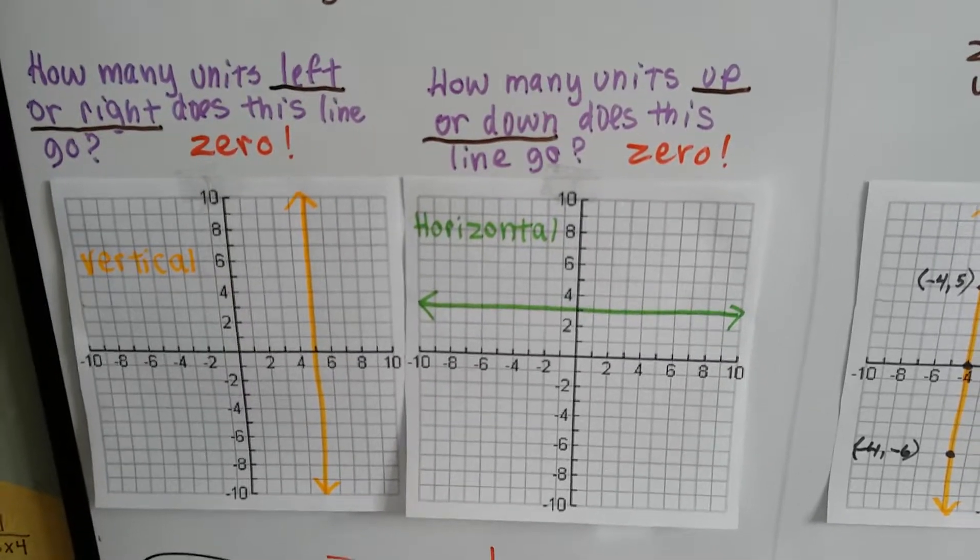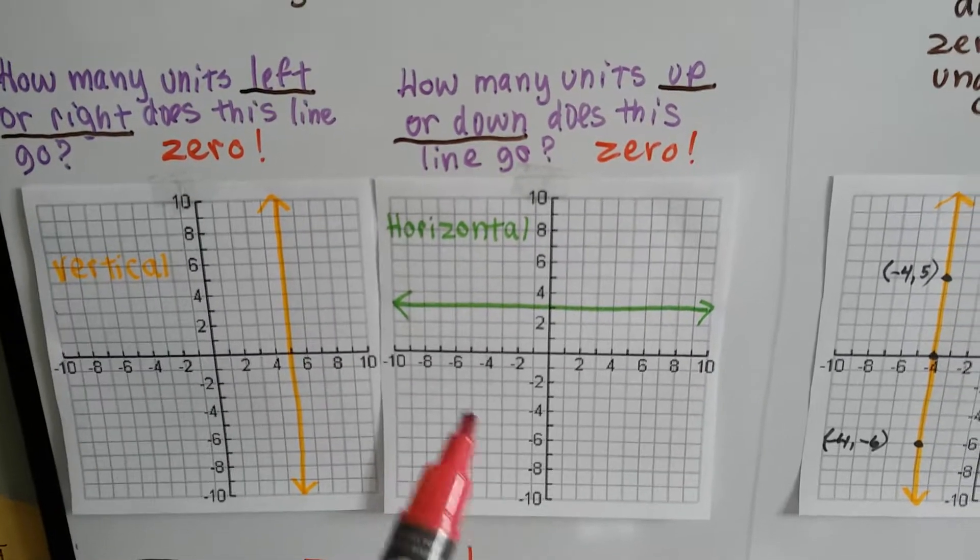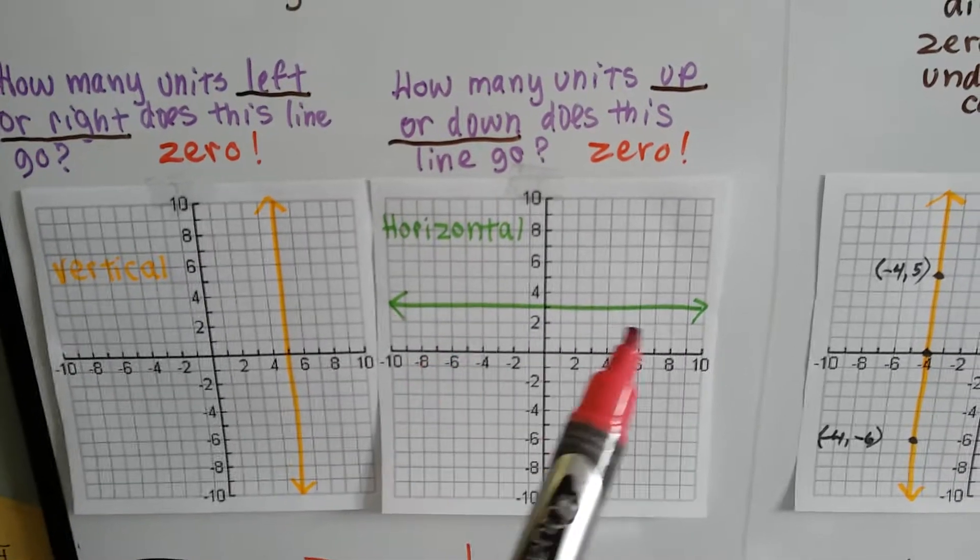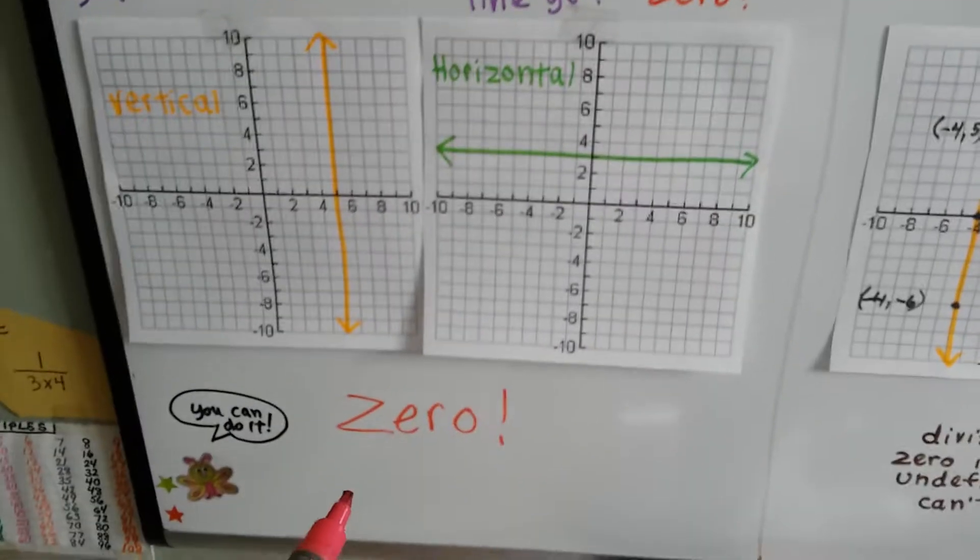How about this horizontal line? How many units up or down is it going? Zero. This side isn't moving any higher than that side, so it's zero.